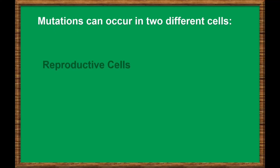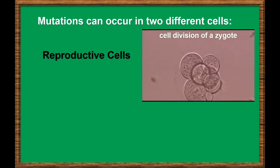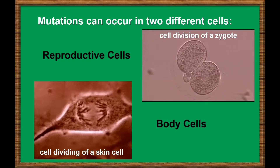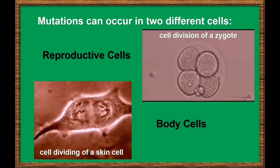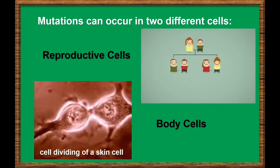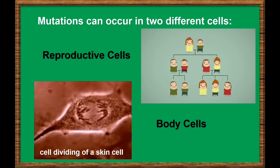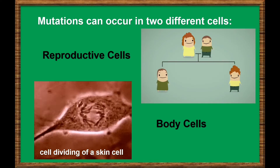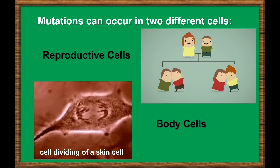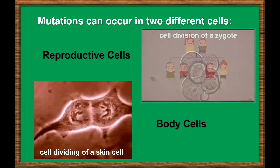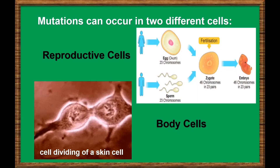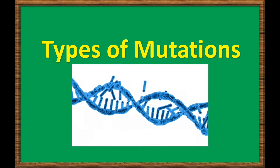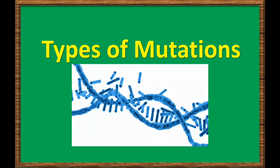Mutations can occur in two different types of cells: the reproductive cells and the body cells. Remember that only mutations in sex cells or reproductive cells pass on to offspring. Mutations can affect the reproductive cells of an organism by changing the sequence of nucleotides within a gene in a sperm or an egg cell. If these cells are fertilized, then the mutated gene becomes a part of the genetic makeup of the offspring. The DNA sequence of a gene can be altered in a number of ways. Here are the types of mutations.